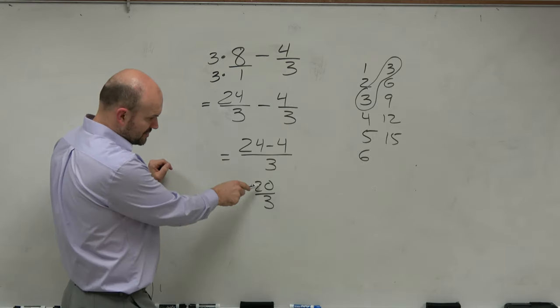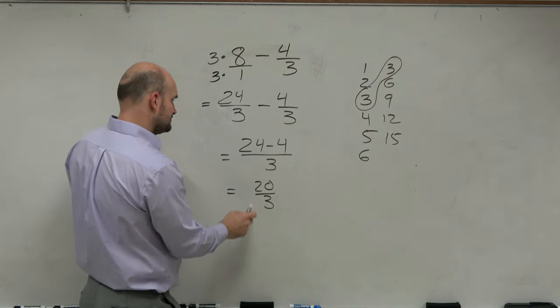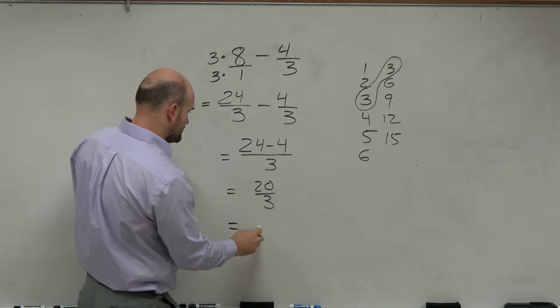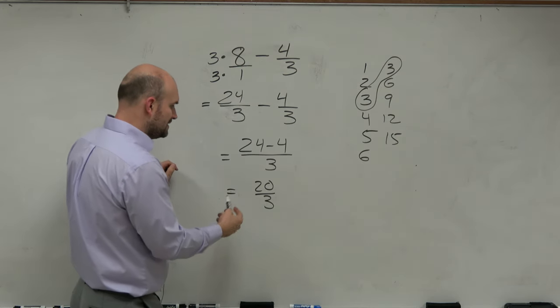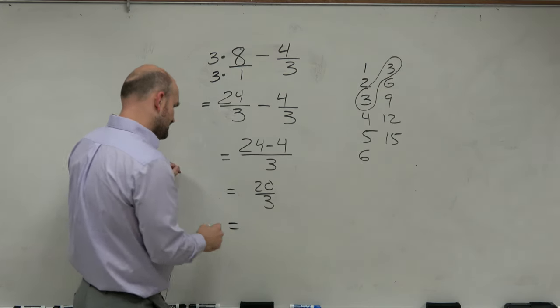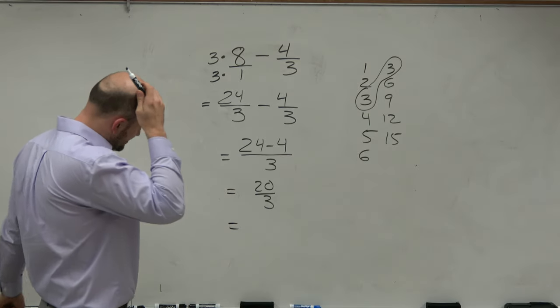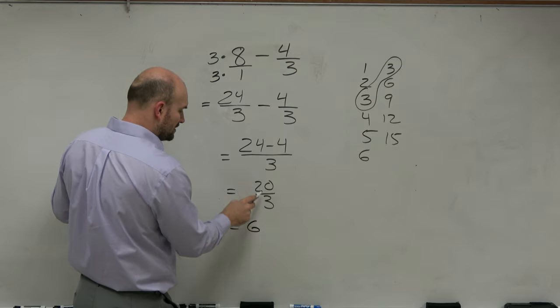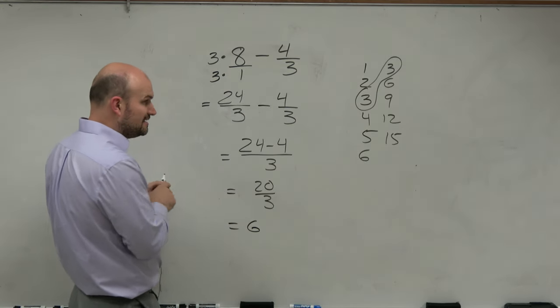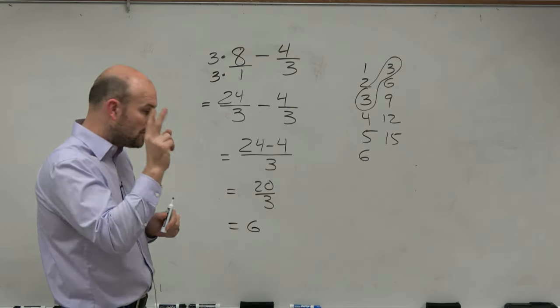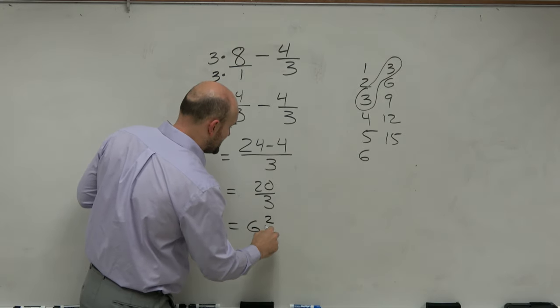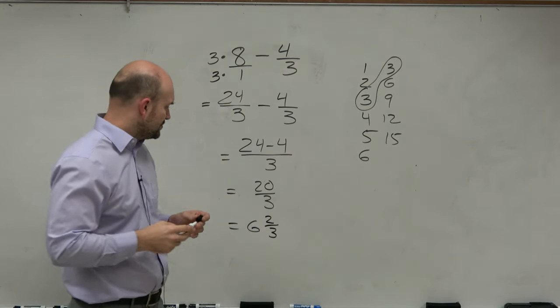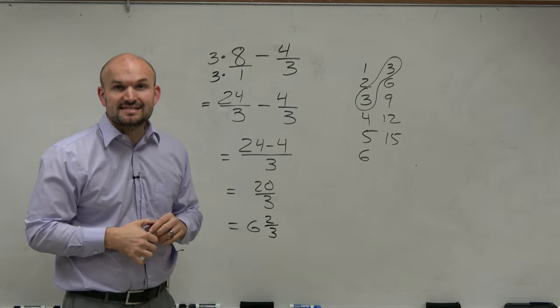Well, 3 times 7 is 21, which is over. So 3 times 6 is 18. Therefore, you have to count 2 more to get to 20. So that's going to be your remainder. Therefore, you can rewrite that as 6 and 2 thirds.